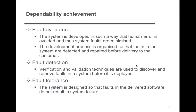Fault detection: we can avoid faults or we can detect them. To detect them, we use verification and validation techniques to discover and remove faults in the system before they are deployed. We think of fault detection with reliability, but it's also part of dependability because they're both playing together. Fault detection is everything we do in testing — we're trying to figure out how the software is going to fail. That's what QA and pre-shipment testing is all about.